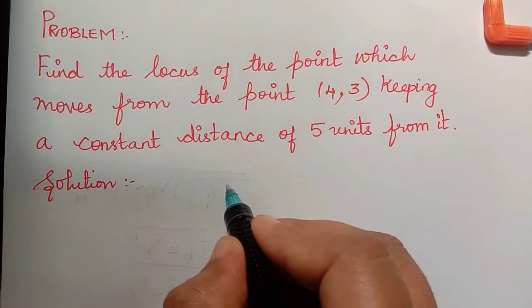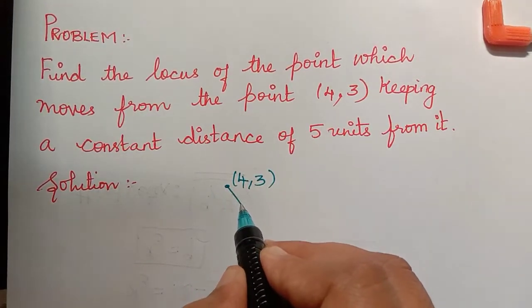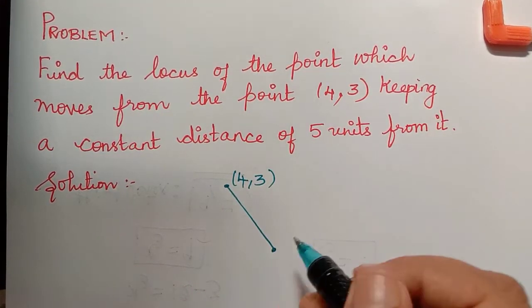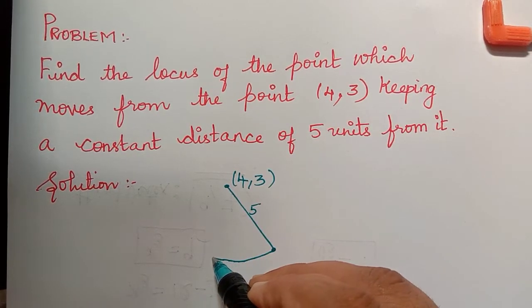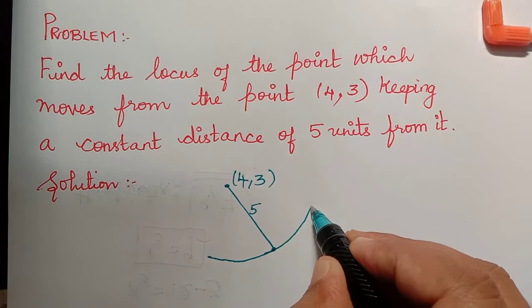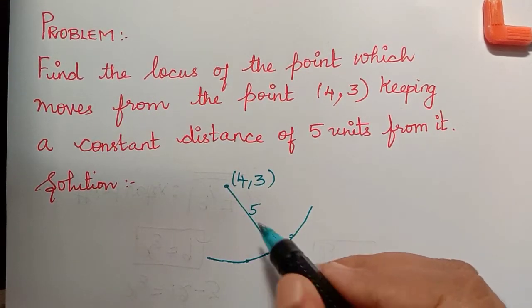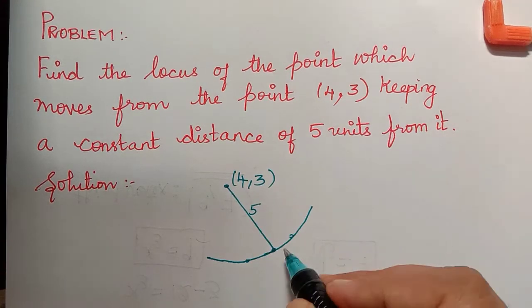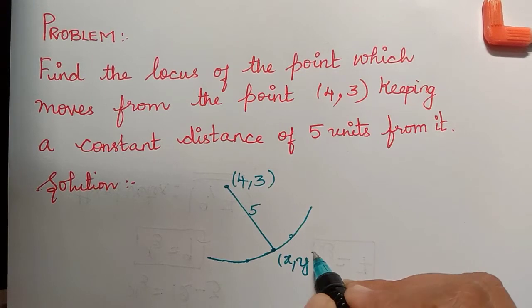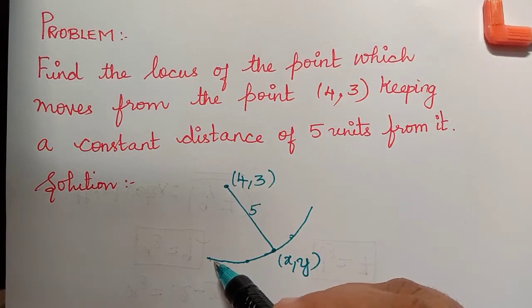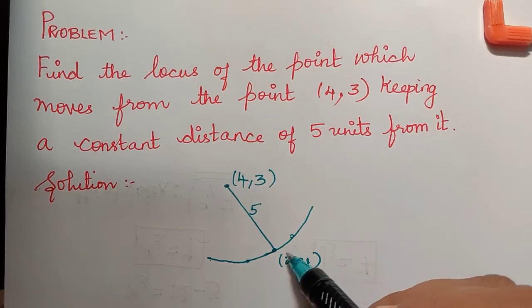So now there is a point (4,3) and they are asking us to find the locus of the point which keeps a constant distance of 5 units. So as this point moves, the distance between this point and the point (4,3) is a constant value 5. So this point is unknown, we can take it as (x,y). Now we have to find the locus of this point (x,y), that is the equation of this curve.